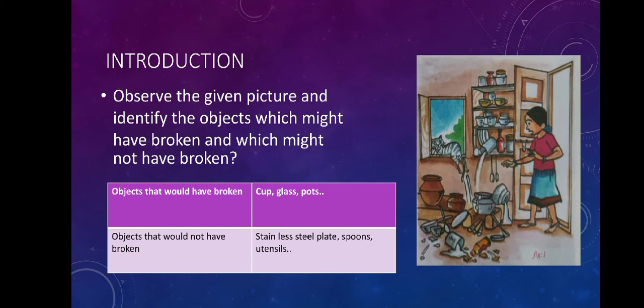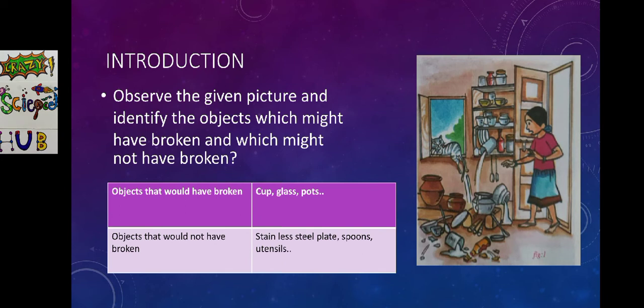Observe this picture carefully children. What happened here? A cat has thrown all the objects down and is running through a window. After that, a girl came to the kitchen and was shocked that some objects have broken and some have not. What do you think? Which objects might have broken and which might not have broken? Guess your answer and note it down in your notebook.